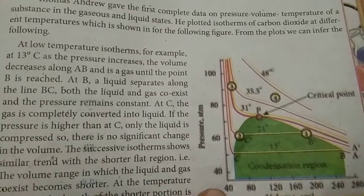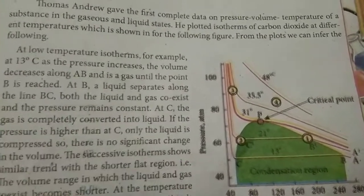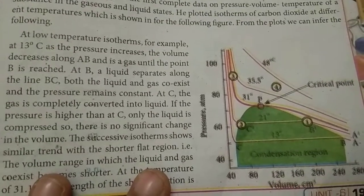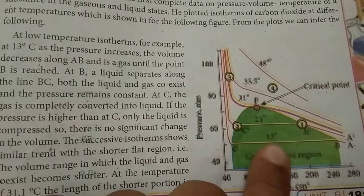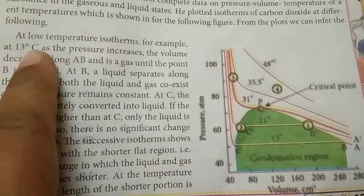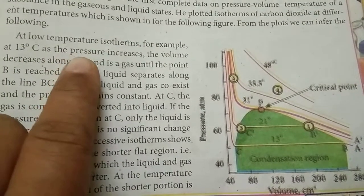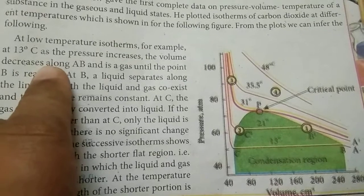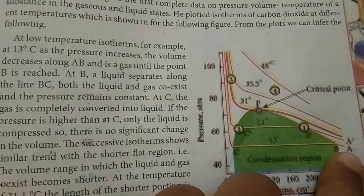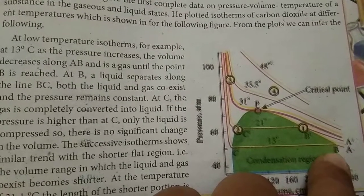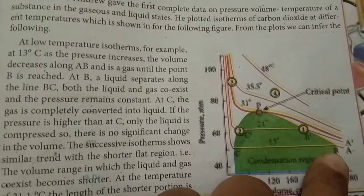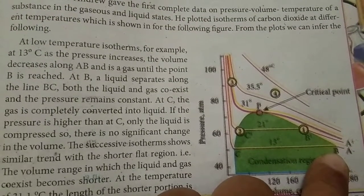Andrew plotted a graph for carbon dioxide between volume and pressure. At low temperature isotherms, for example at 13 degrees Celsius: as the pressure increases, the volume decreases along AB, and it is a gas until point B is reached.